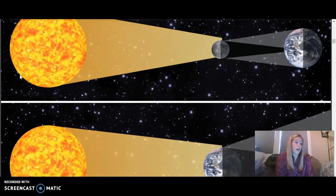A solar eclipse happens when the moon comes between the sun and Earth, hiding the sun so some people on Earth can't see it. A lunar eclipse is when Earth comes between the sun and moon. When this happens, people on Earth see Earth's shadow on the moon, making the moon appear darker or even seem to disappear. But the moon doesn't really disappear — it's just hidden for a short time in Earth's shadow.